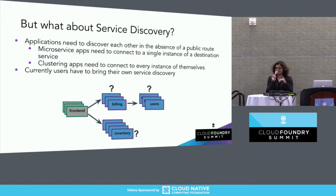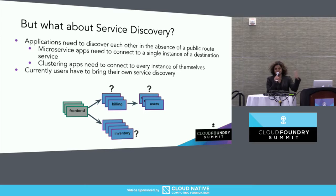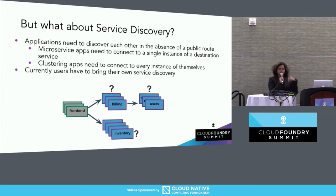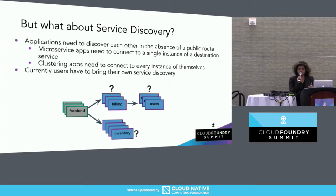When we spoke at CF Summit in Basel, we had this slide about a track of work we were going to take on. The question we asked then was: container-to-container networking is great, but if I have to bring my own service discovery, is it a burden on app developers? For any application you need to know what to connect to and what port it's listening on. We classified this into two types: microservice apps that need load balancing and connecting to any arbitrary backend, and clustering apps that are more peer-to-peer. The basic problem we set out to solve was that users had to bring their own service discovery — there was no service discovery for C2C on the platform.